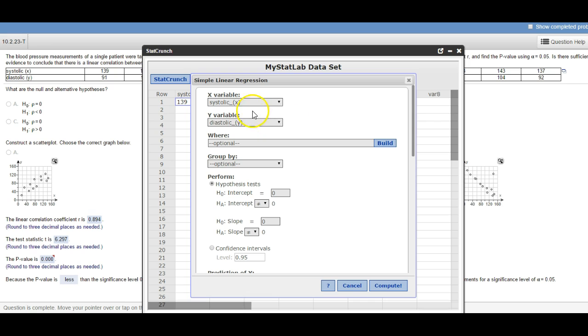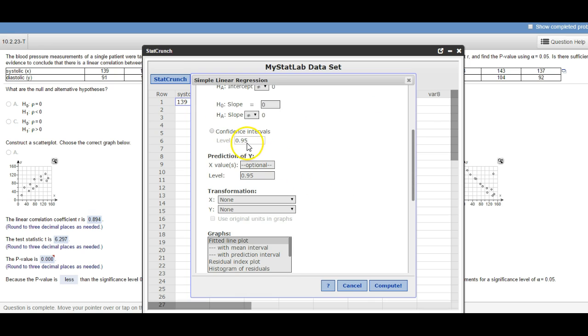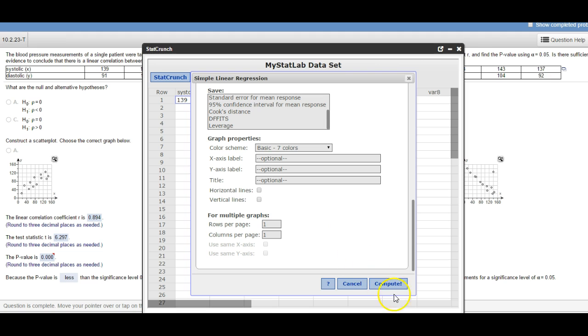So just leave that at 0.95, or you know if this changes like 0.01, then that would be 0.99. No transformation, just compute. So really all you have to do is just label who's who and then tell it your level and compute.